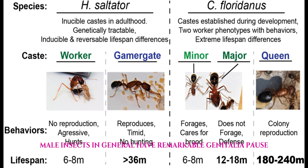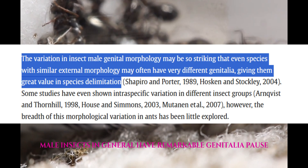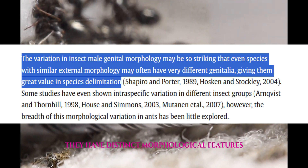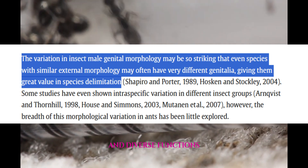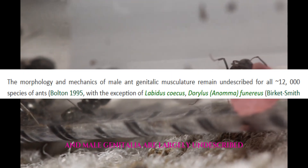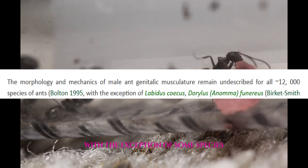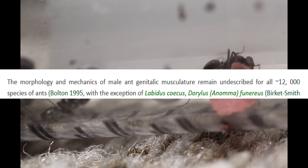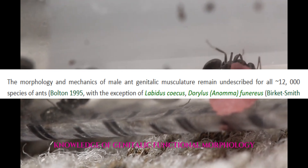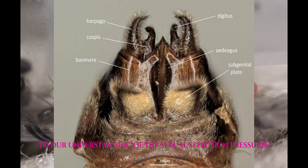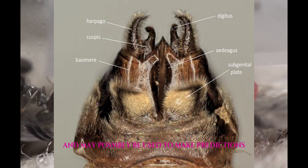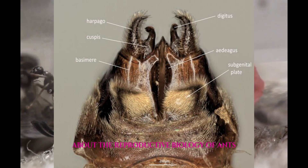Male insects in general have remarkable genitalia, with distinct morphological features and diverse functions. Ant male genitalia are largely undescribed, with the exception of some species. Knowledge of genitalic functional morphology contributes to our understanding of the sexual selection pressures which act on these organs, and may possibly be used to make predictions about the reproductive biology of ants.